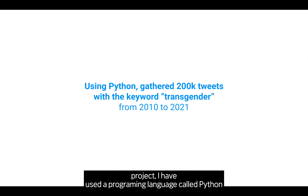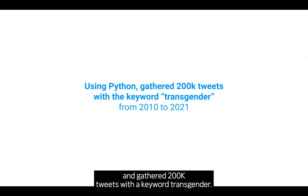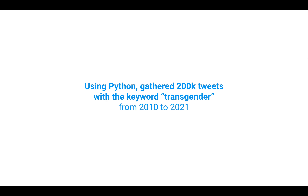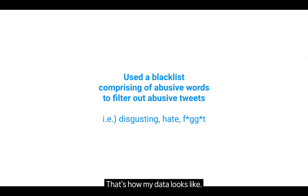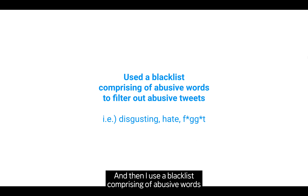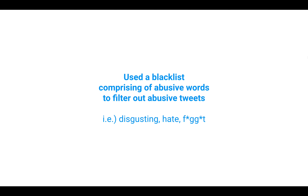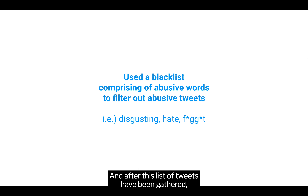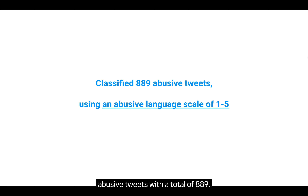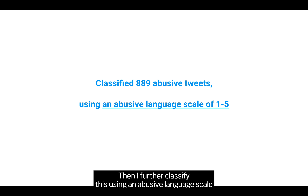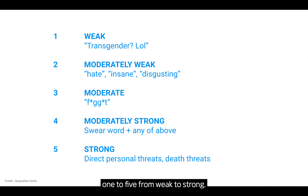For this project, I have used a programming language called Python and gathered 200k tweets with the keyword 'transgender.' That's how my data looks like. I then used a blacklist comprising abusive words to filter out abusive tweets, such as 'disgusting' and 'hate.' After this list of tweets was gathered, I read through them manually to find true abusive tweets, with a total of 889. I further classified these using an abusive language scale of 1 to 5, from weak to strong.